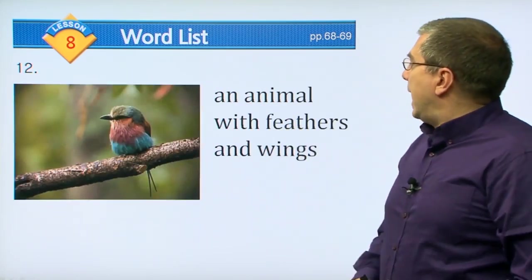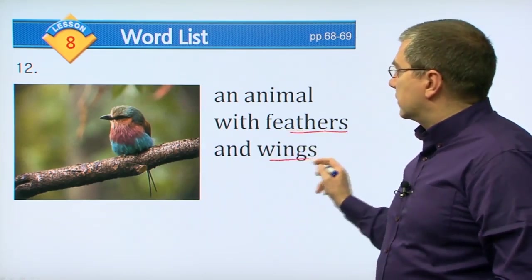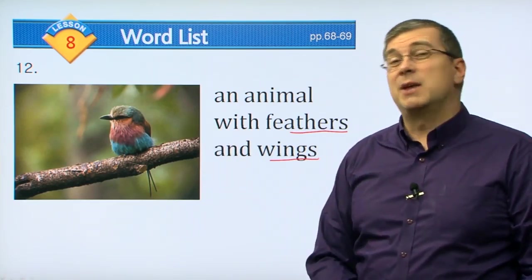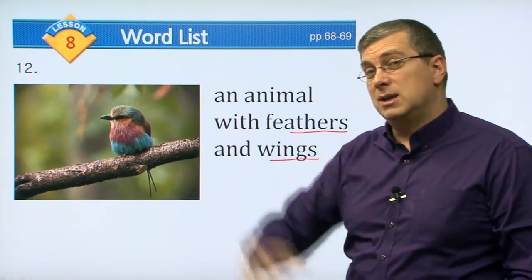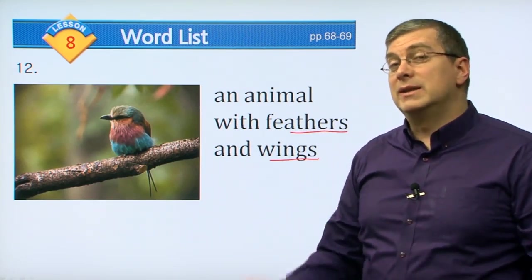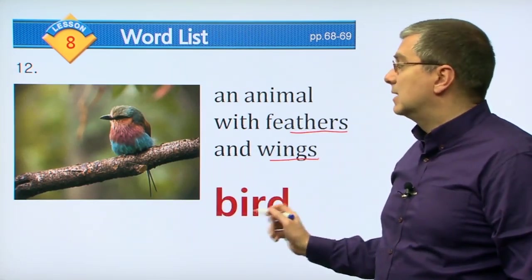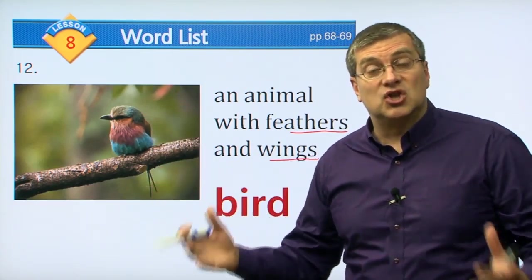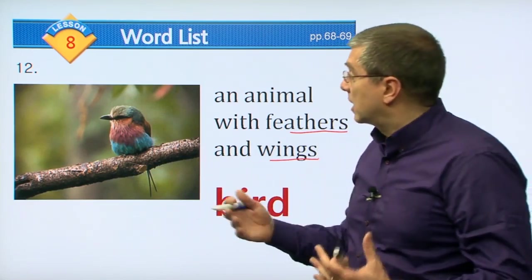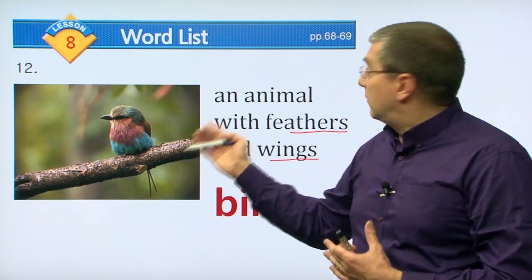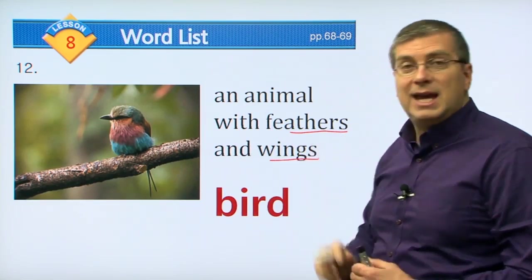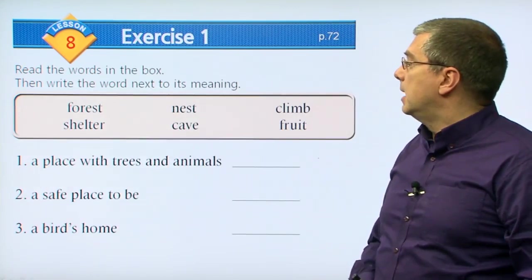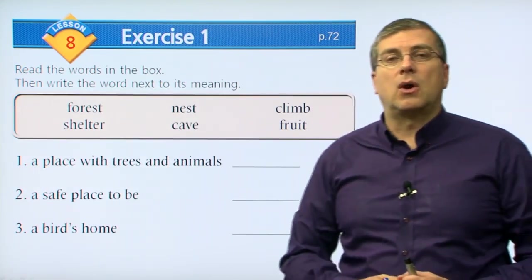An animal with feathers and wings. We already talked about this type of animal - what type of shelter does it make in the trees? It makes a nest. What is it? Of course, we know it's a bird. There are many different kinds of birds - different shapes, different sizes, different colors. But if they have feathers and wings, we say it is a bird. So that wraps it up for our vocabulary.